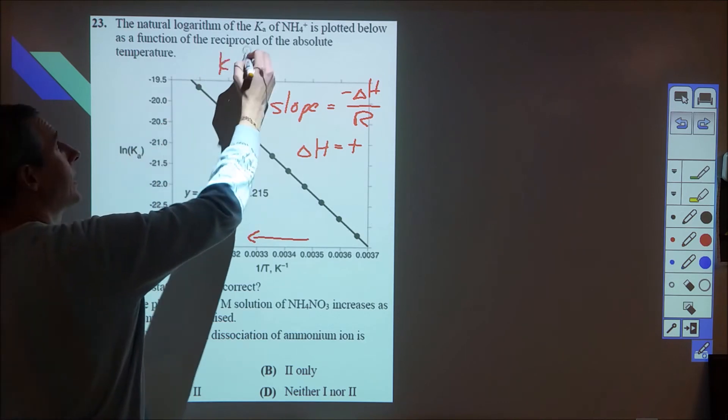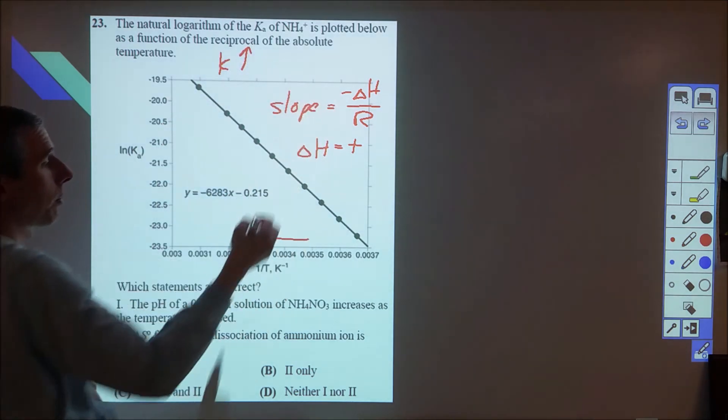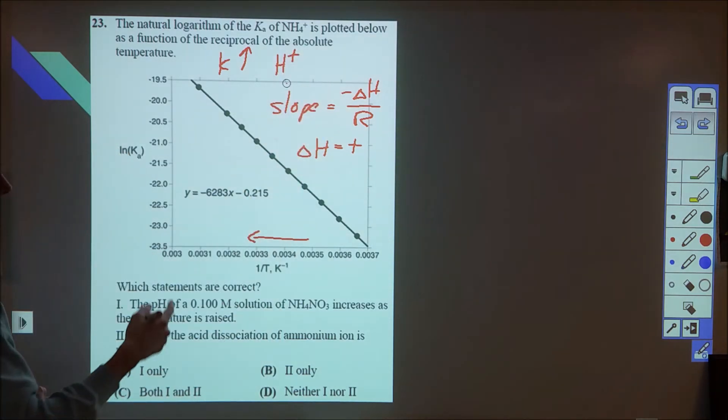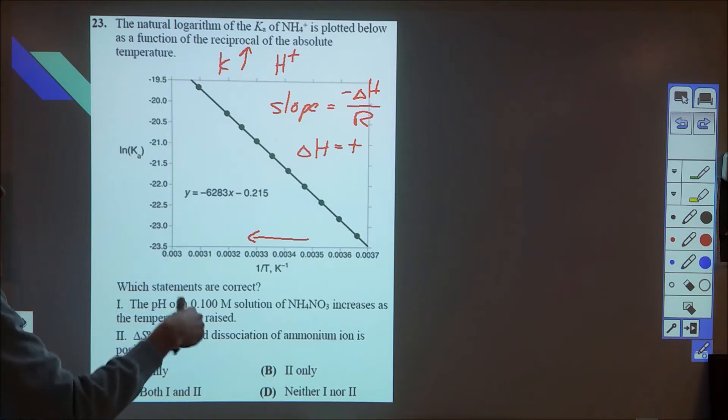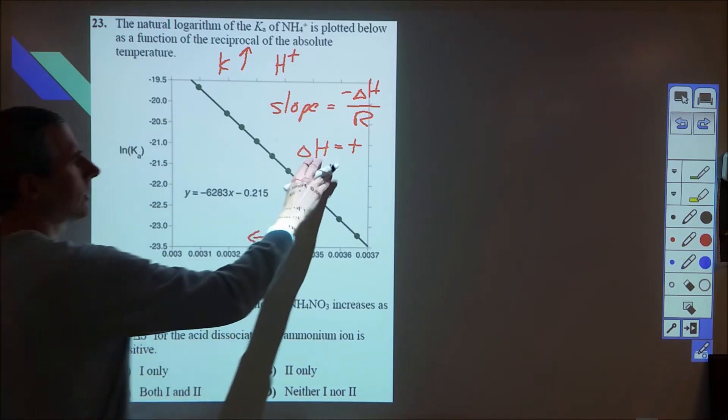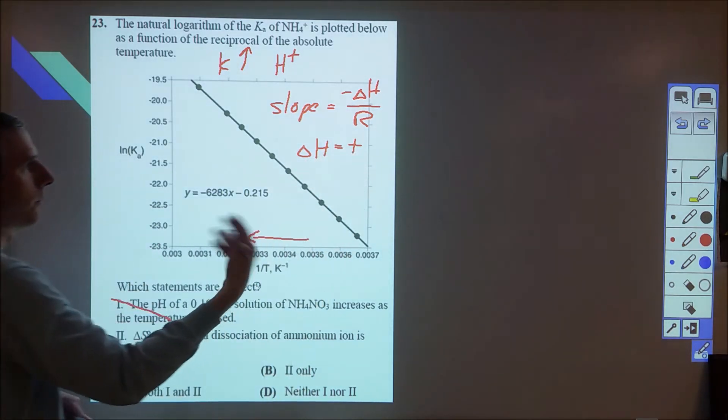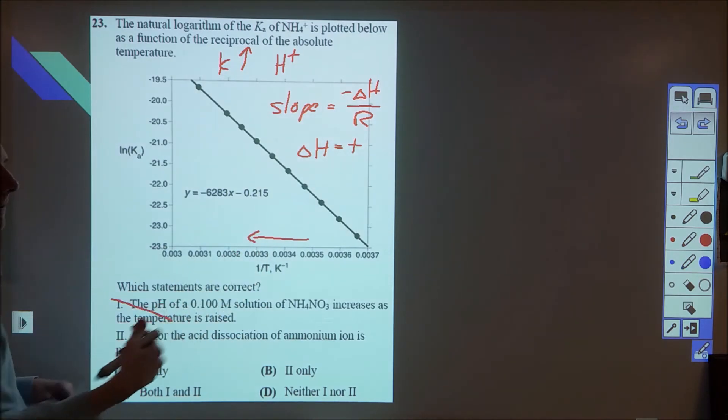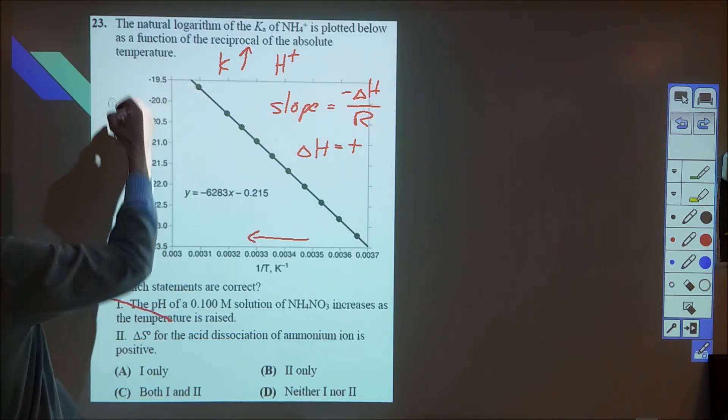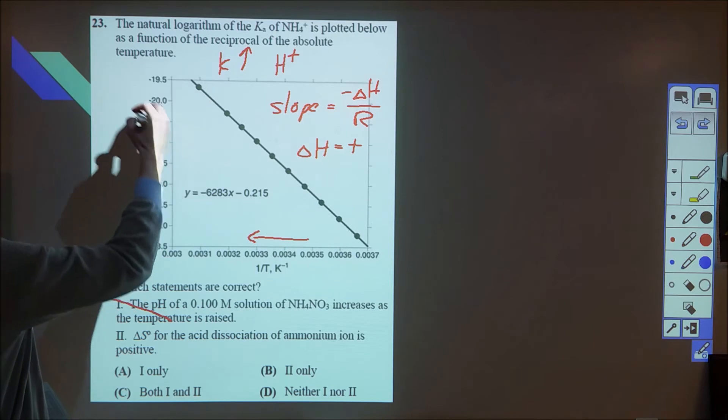That means that K is increasing, which means we're getting more products, which means we're getting more H-plus from the NH4-plus. And so the pH would not be going up, the pH would be going down. So we know that 1 is incorrect. And then the second part says that delta S is positive. So we know that delta H is positive. That's not going to be helpful for this being a spontaneous reaction. So the question then kind of lies in, well, is this a spontaneous reaction?